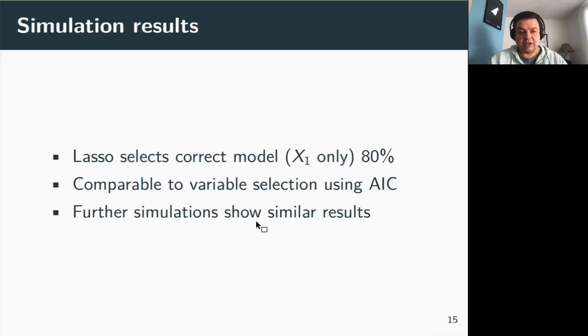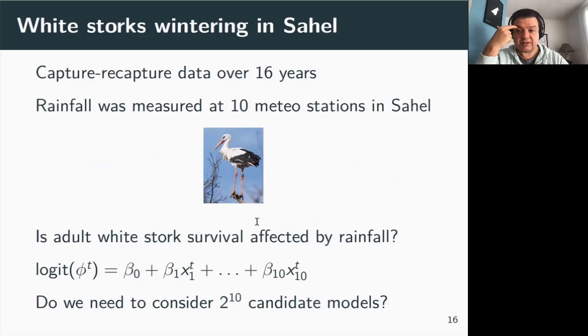As a case study, we considered the demography of white storks in France. These guys spend the winter in Africa, in the Sahel region to be exact. The capture-recapture data we have span over 16 years for more than 200 individuals that were marked. We had measures of rainfall at weather stations in the Sahel, 10 of them to be exact. The main objective of the study was to explore the effects of climate conditions captured by rainfall on adult survival.